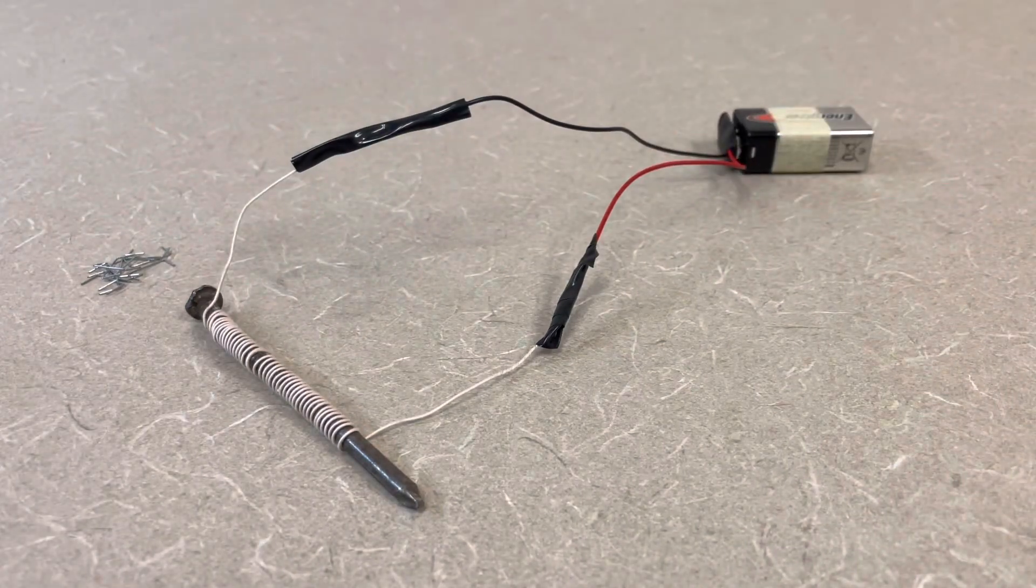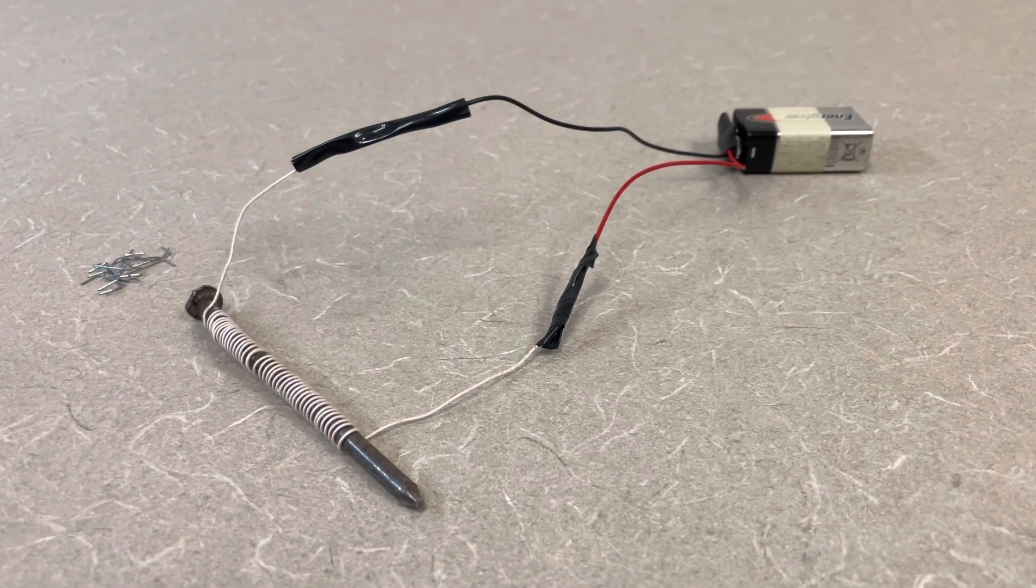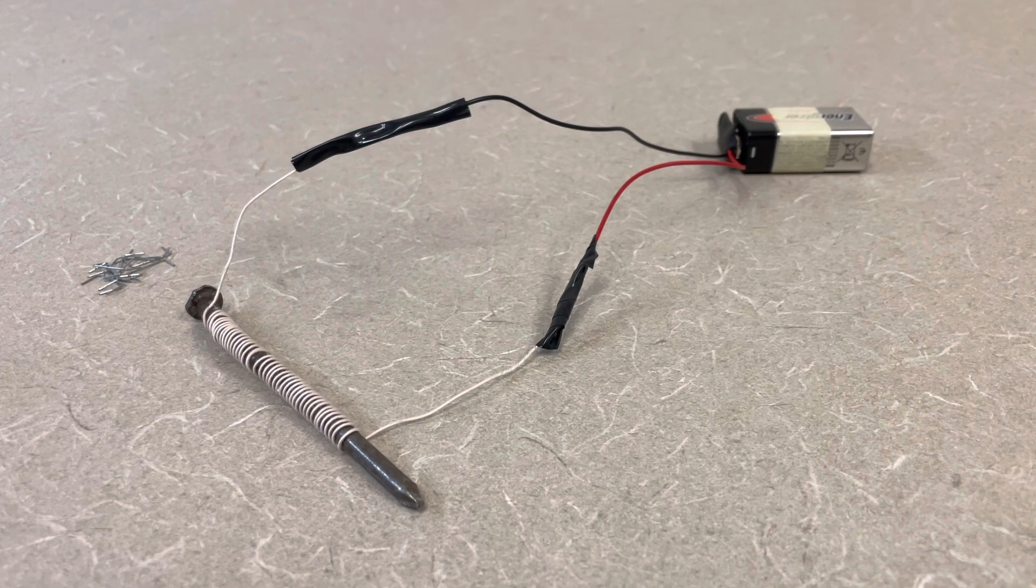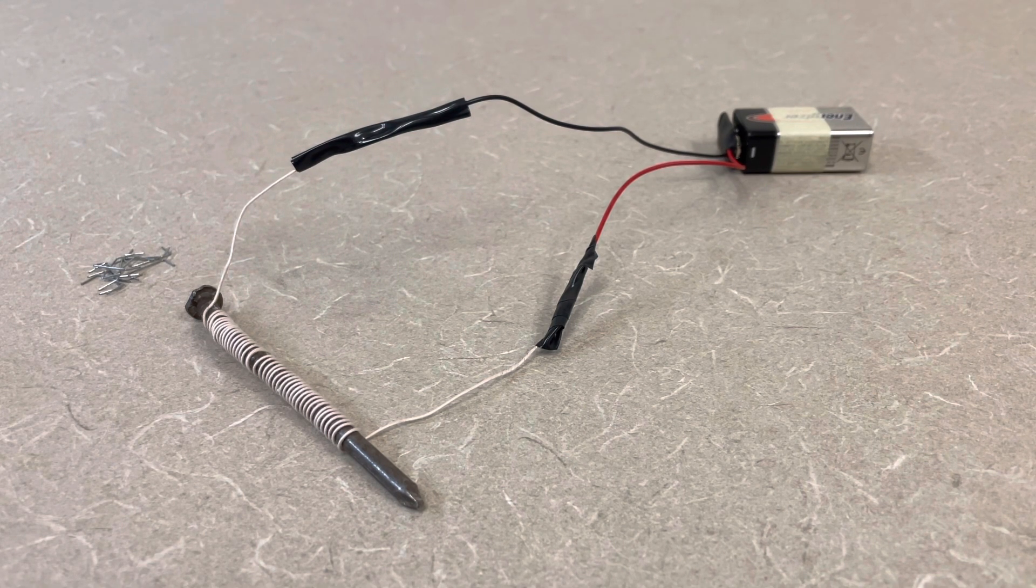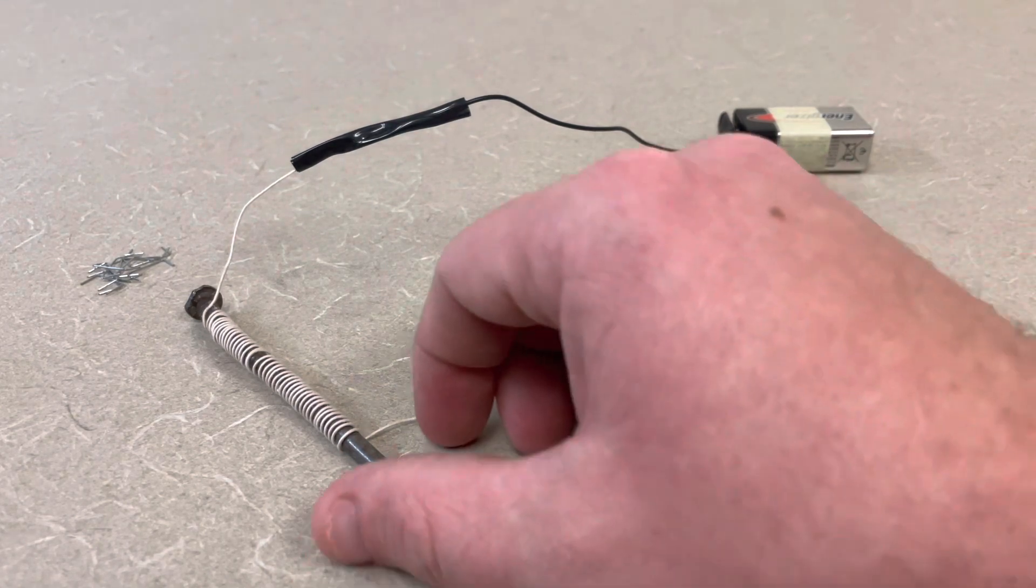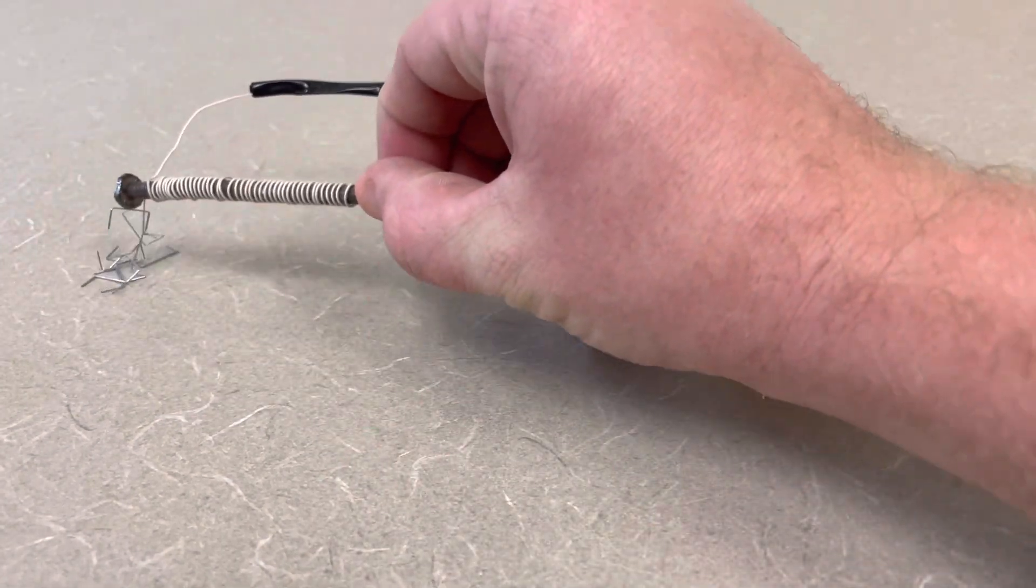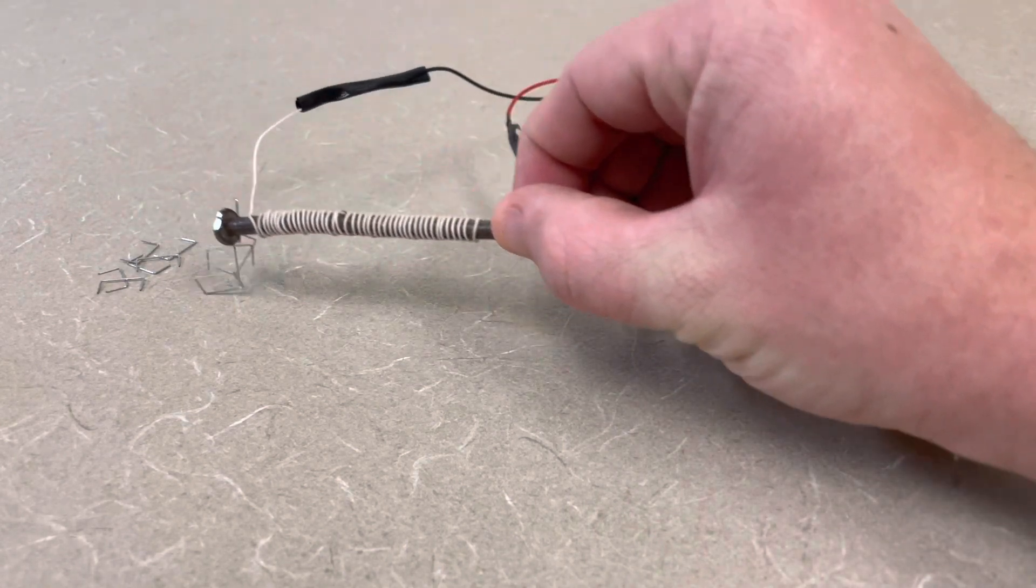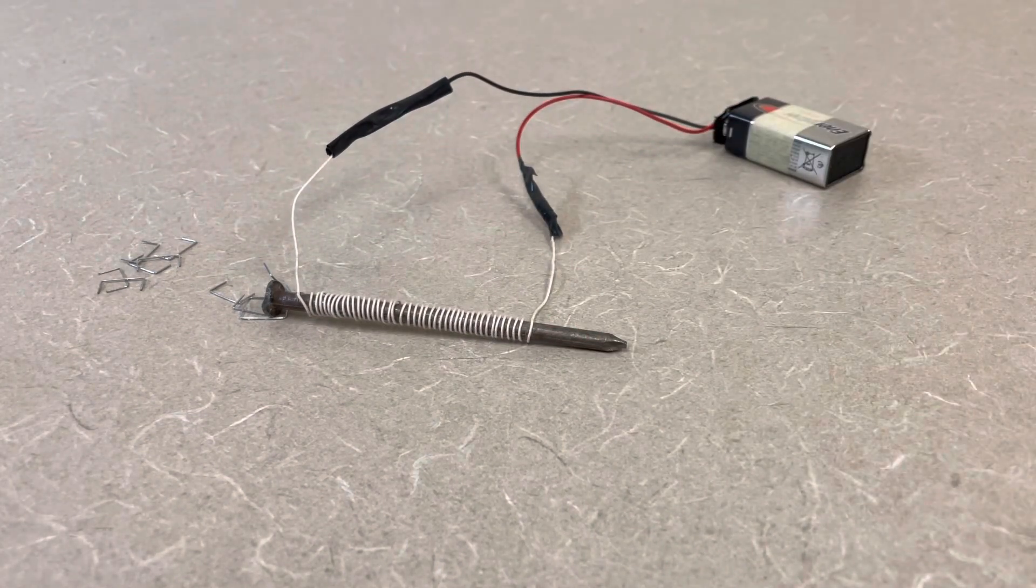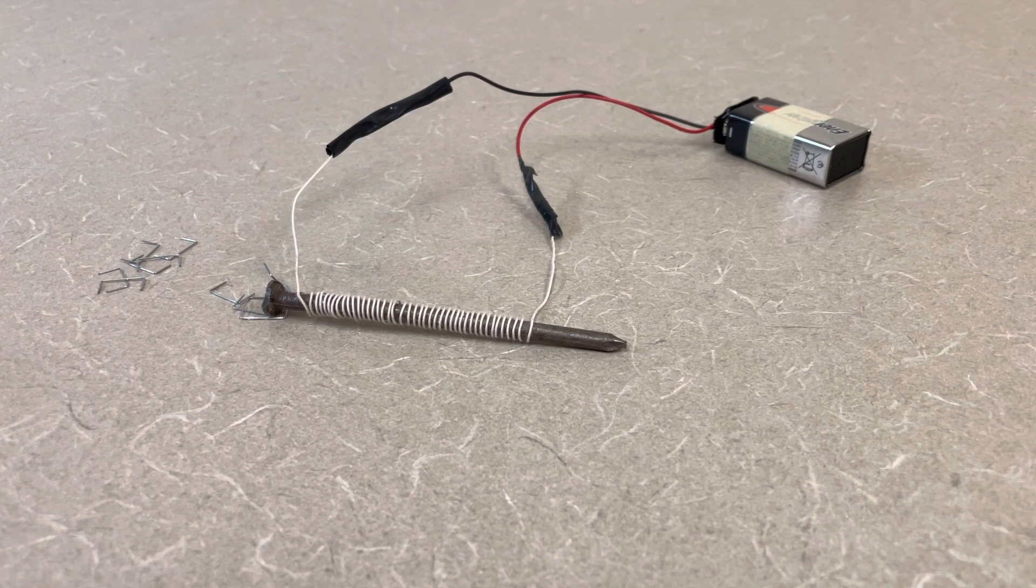So when I connect this, if I just give it a second here, what I should see is that that electric current flowing through the wire, wrapped around the nail as a solenoid, I should be able to lift up these paper clips. And so what you're seeing with this phenomenon is an electric current produces a magnetic field.